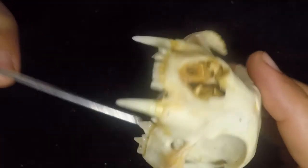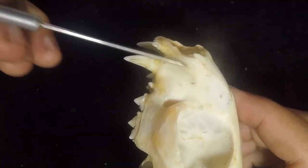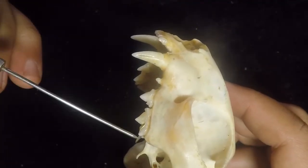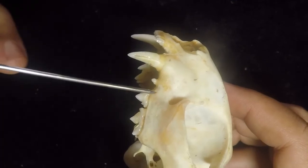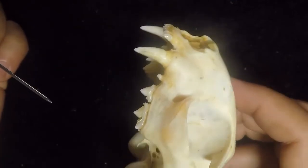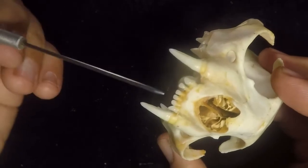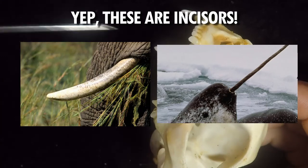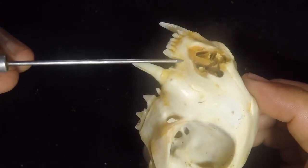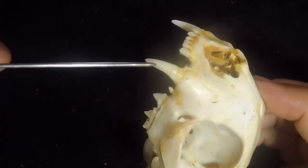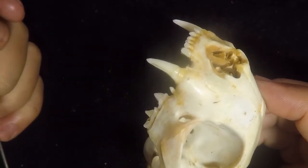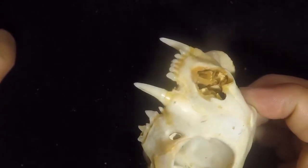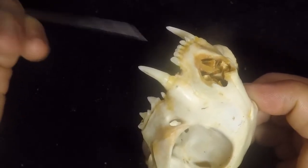So how do you know what kind of tooth you're looking at? If it is sitting on the premaxilla, then you know that it is an incisor. The rest of the teeth — canines, premolars, and molars — all of them will sit on the maxilla. Why am I saying this? Because there are certain organisms where their incisors actually look like canines — their incisors are very long like tusks. But if they sit on the premaxilla, even if it looks like a canine, it is actually an incisor.